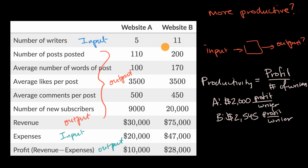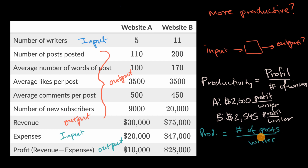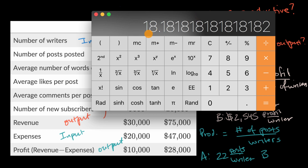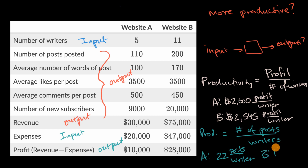What if we used an even simpler measure — the number of posts per writer? If we define productivity as posts divided by writers, website A would have 110 divided by 5, which is 22 posts per writer. Website B would have 200 divided by 11, which rounds to about 18 posts per writer. So by this measure of productivity, website A actually looks more productive.